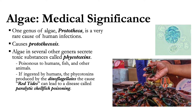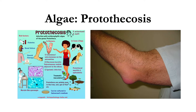Algae and several other genera secrete toxic substances called phycotoxins, which are poisonous to humans, fish, and other animals. The phycotoxins produced by dinoflagellates cause red tides, and if ingested by humans, this can lead to a disease called paralytic shellfish poisoning. This is one clinical manifestation of protothecosis.